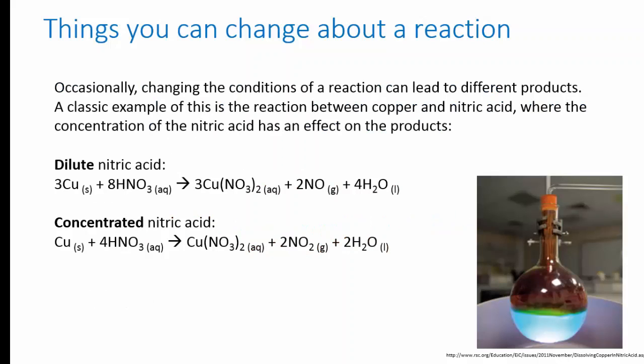A classic example of a change in products that's easy to replicate in the lab is the reaction between copper and nitric acid, not an organic reaction this one. If you add some copper to dilute nitric acid, one molar for example, then you get copper nitrate produced along with nitrogen monoxide gas and water. Nitrogen monoxide is colorless.